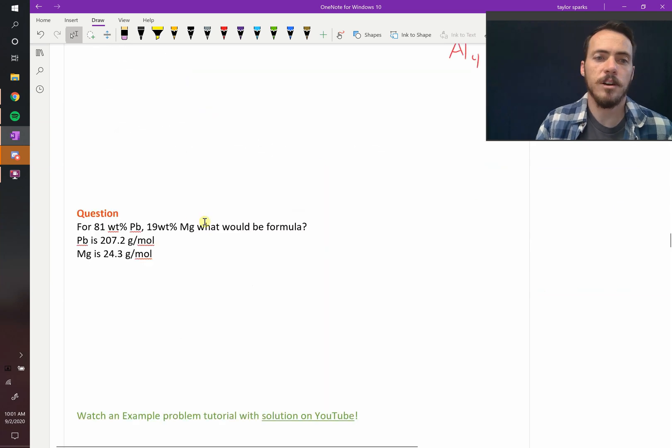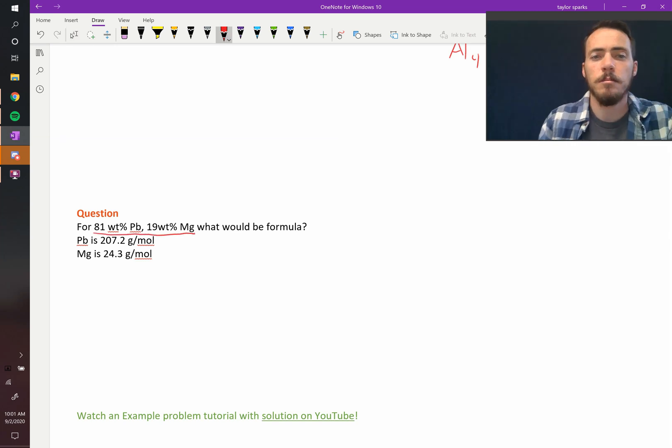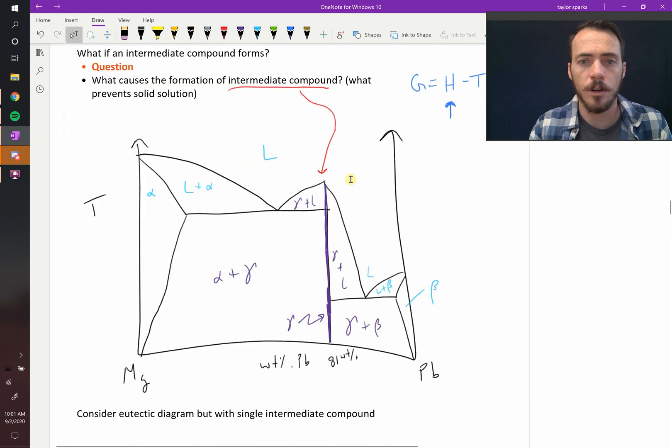What about in a scenario where it's plotted in weight percent? So consider this one. 81 weight percent is lead, and 19 weight percent is magnesium. What would be the formula of this compound? By the way, this is the one that we saw up here. This intermediate compound happens at 81 weight percent lead. So what would be the formula?